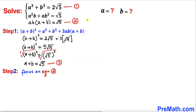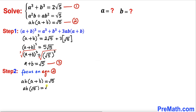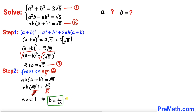Now let's focus on equation two. We know from equation three that a + b = √5, so equation two becomes a × b × √5 = √5. Dividing both sides by √5, ab turns out to be simply equal to 1, which means b = 1/a.